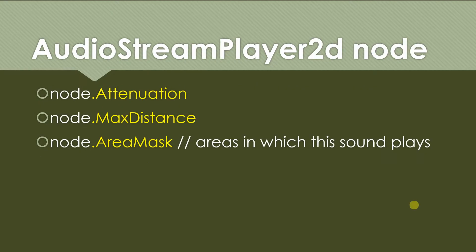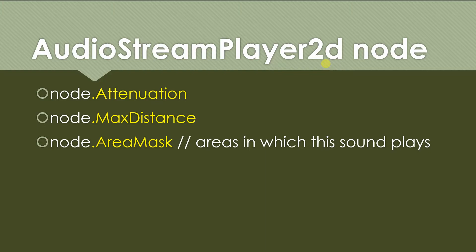Next, Audio Stream Player 2D is the positional sound node. The volume of the sound is a function of how close the sound is to the center of the screen. The further the sound is from the center of the screen, the quieter it sounds; the closer, the louder. By center of the screen I mean the center of the Godot game window.